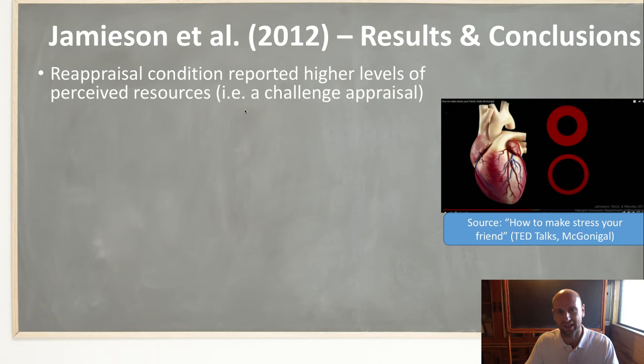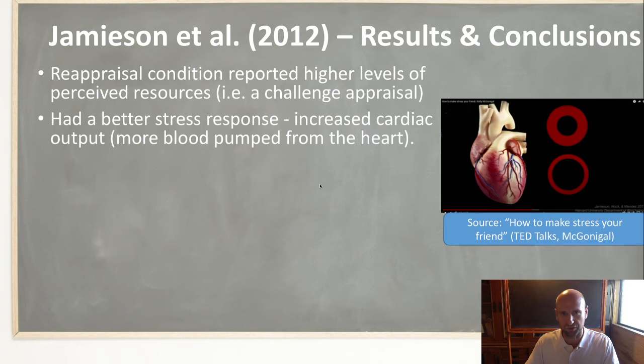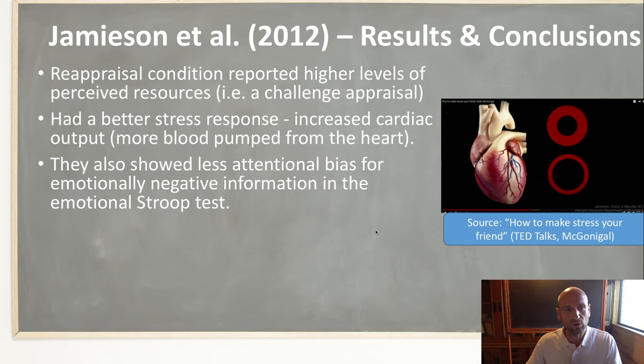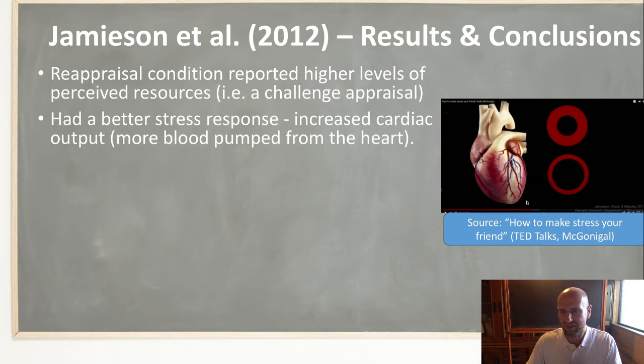Carrying on with the study: in the reappraisal group, the questionnaire showed they felt they had more resources, suggesting a challenge appraisal — meaning 'I've got the resources to cope with this.' They also had a better stress response, specifically increased cardiac output, meaning more volume of blood pumped from the heart. We can also see differences in the arteries.